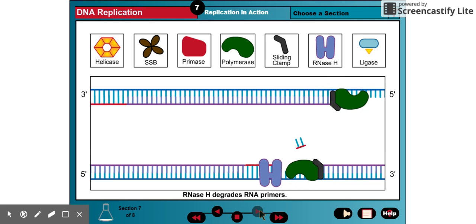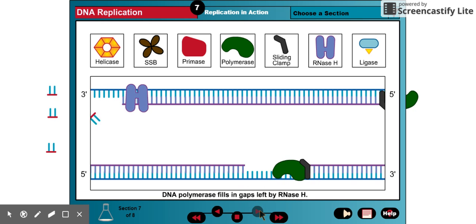As replication proceeds, RNase H recognizes RNA primers bound to DNA templates, and removes the primers by hydrolyzing the RNA. DNA polymerase can then fill in the gap left by RNase H.